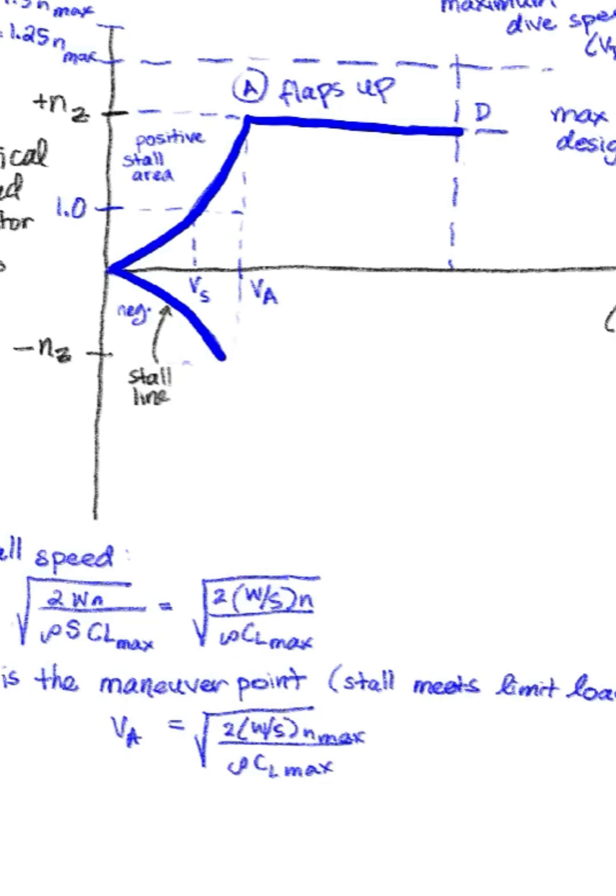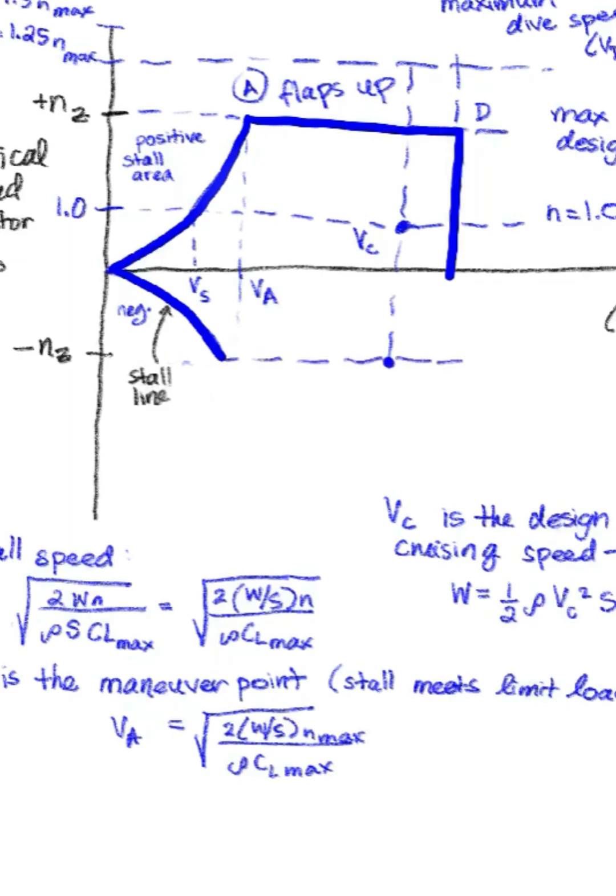So where the stall curve meets the limit load, that's our maneuver point. N equals 1 for cruise. Max loads are with the flaps up. And then we got our dive speed, which is the maximum speed an aircraft can fly when it's diving downward without causing any damage. Then VC is our design cruising speed.